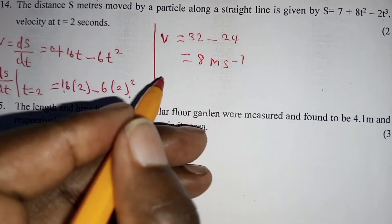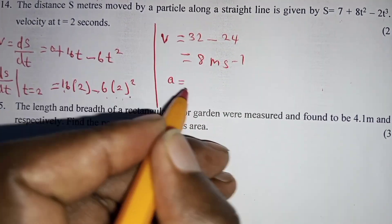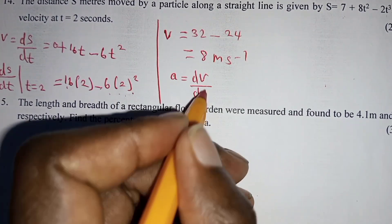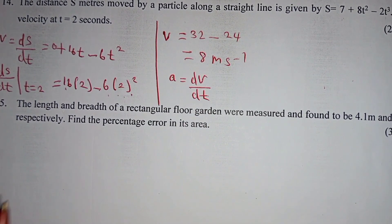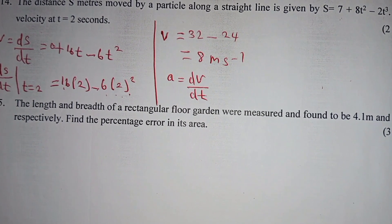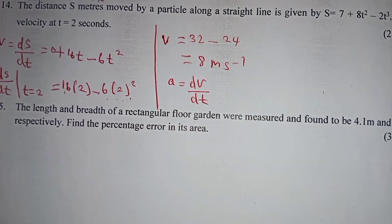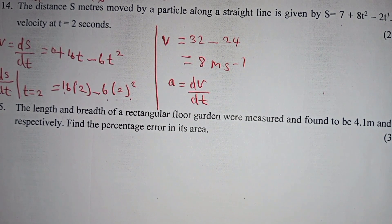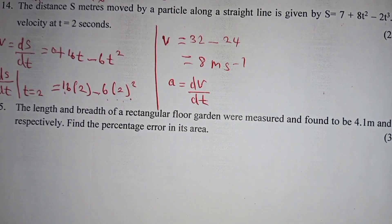In case you are going to get the acceleration, note that a will be given by derivative of v with respect to time, because the acceleration is the rate of change of velocity with respect to time. Although the question didn't require you to do so, maybe next time that is what you will be asked to do.